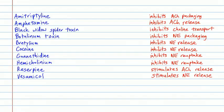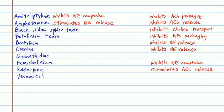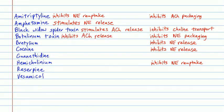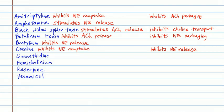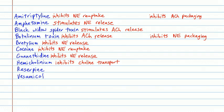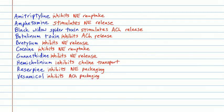Before the end-of-session quiz, let's do a quick whiteboard review. I've listed several drugs and toxins to match with their actions on autonomic nerve terminals. Amitriptyline (a TCA) inhibits norepinephrine reuptake. Amphetamine stimulates norepinephrine release. Black widow spider toxin stimulates acetylcholine release. Botulinum toxin inhibits acetylcholine release. Cocaine inhibits norepinephrine reuptake. Guanethidine inhibits norepinephrine release. Hemicholinium inhibits choline transport.